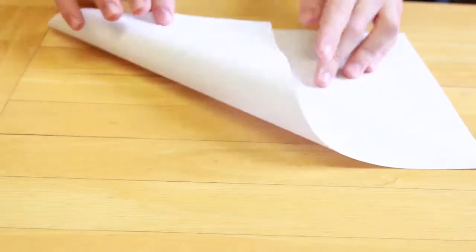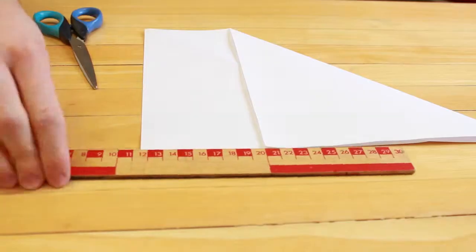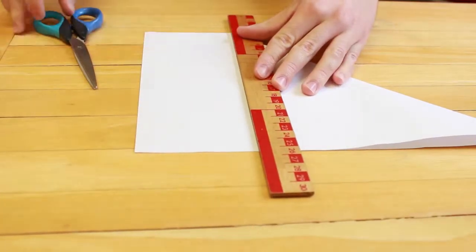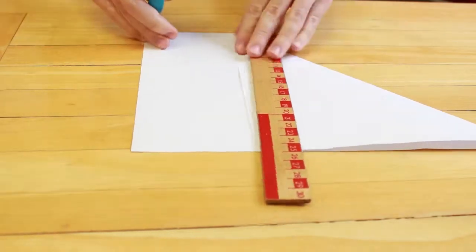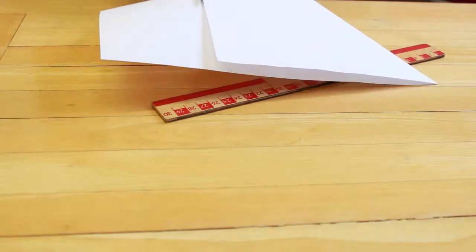Start by folding one corner down to the edge to create a right angled triangle. The next step is to use your ruler to make sure the line is straight, then cut out the line with your scissors, then unfold the square.